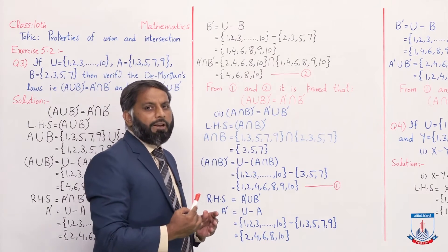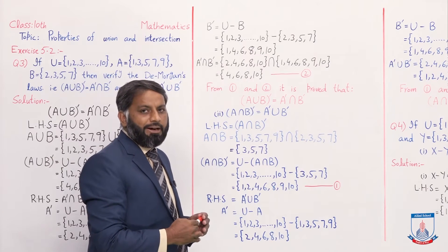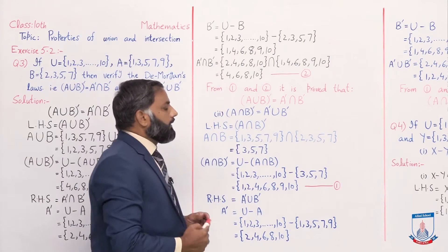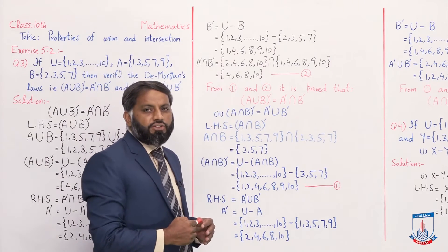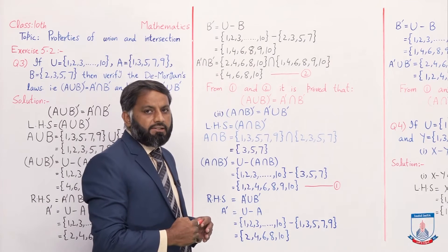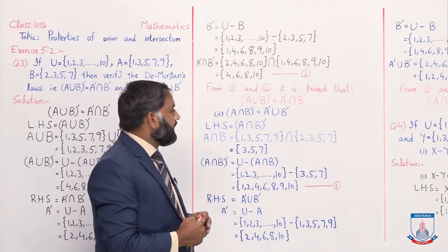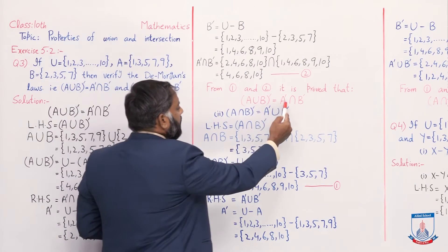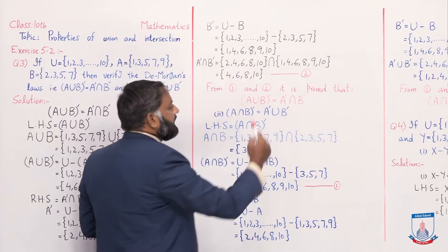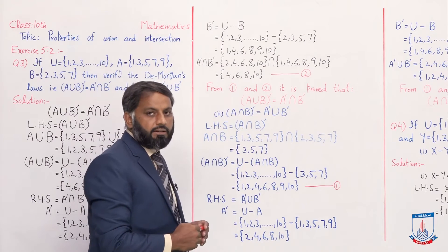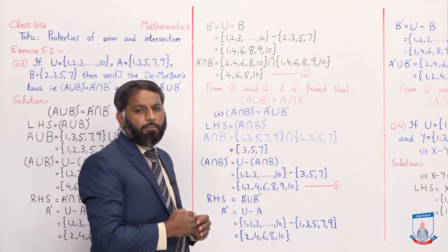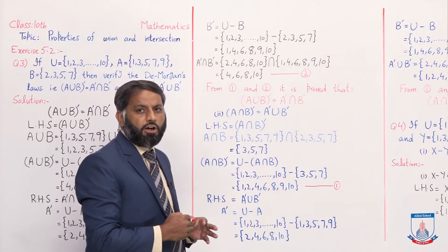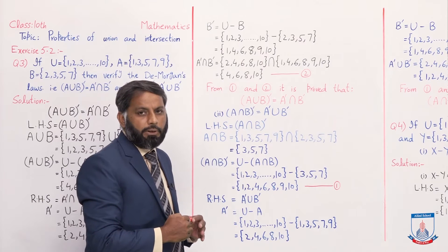On the last board we have equation 1 and equation 2. From both equations it is proved that (A∪B)' = A'∩B'. The first De Morgan's Law is verified.